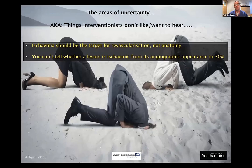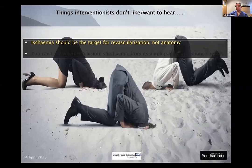Why do we need to know both ischemia and anatomy? Two reasons: ischemia is probably the target for revascularization rather than anatomy, and secondly, you can't tell whether a lesion is ischemic just by looking at its angiographic appearance. Ischemia should be the target for revascularization — not anatomy.